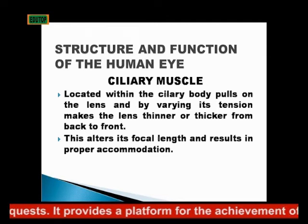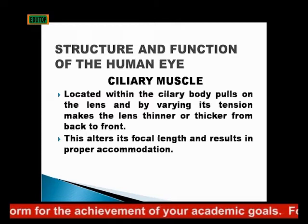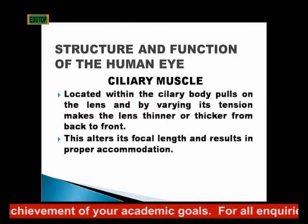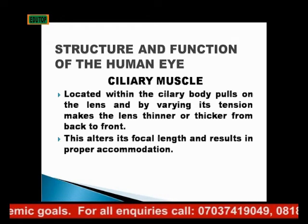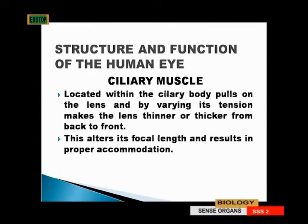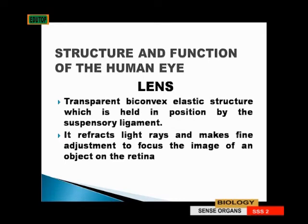The ciliary muscle is located within the ciliary body and pulls on the lens by varying its tension, making the lens thinner or thicker from back to front. The ciliary muscle alters the focal length of the lens, resulting in proper accommodation. The cornea is a thick transparent tissue, which is a continuation of the sclera in front of the eye. The lens is a transparent biconvex elastic structure held in position by a suspending ligament. It refracts light and makes fine adjustments to focus the image of an object on the retina.